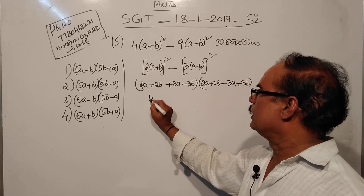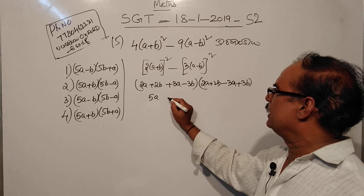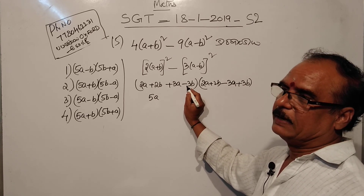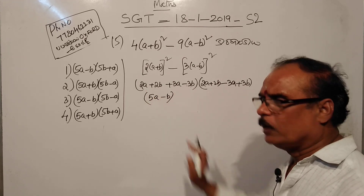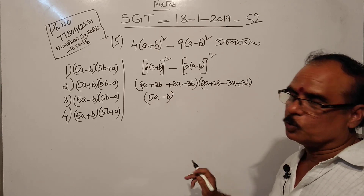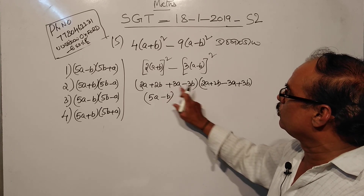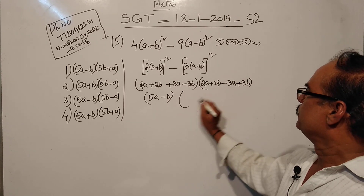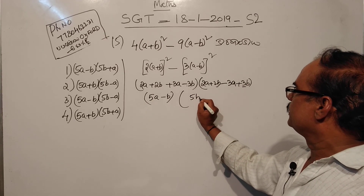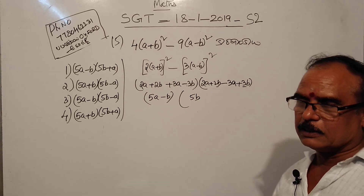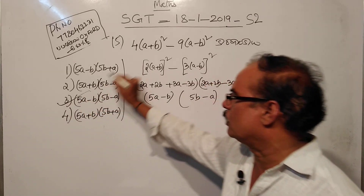2a plus 3a is 5a. 2 minus 3, 3 minus 3. So, 5a minus b. 3 minus 2, 2 minus 3. 1 minus b, 2 minus b. 2 minus b, 2 plus b. 3b. 2a minus 3a, that is minus a. That is 5a minus b. 5b minus a. Third option.